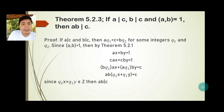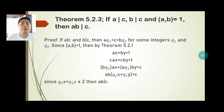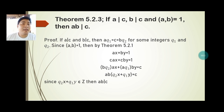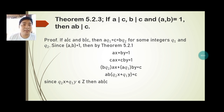Theorem 5.2.3: If a divides c, b divides c, and gcd(a, b) = 1, then ab divides c. Proof: Let aq_1 = c = bq_2 for integers q_1 and q_2. Since gcd(a, b) = 1, by Theorem 5.2.1, ax + by = 1, so cax + cby = c. Substituting: bq_2·ax + aq_1·by = c, giving ab(q_2x + q_1y) = c. Since q_2x + q_1y is an integer, ab divides c.